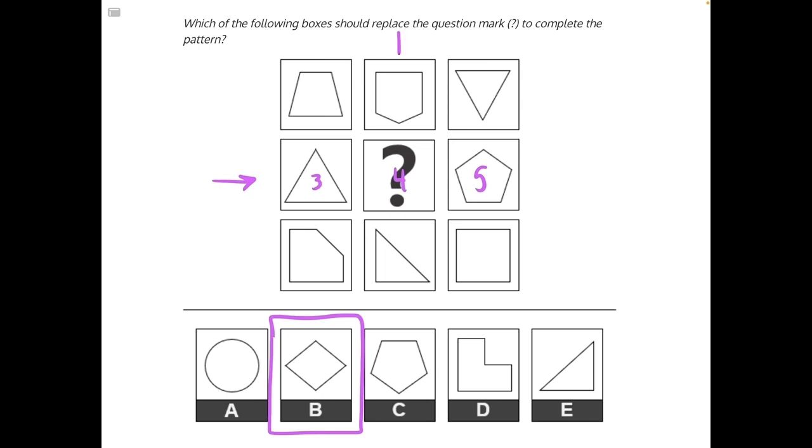We could also look at our columns and see that we have five, three, and again, we would need a four-sided shape, a quadrilateral, which matches answer choice B.